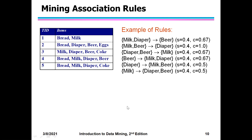Let me clarify. Support equals the count of X union Y divided by N. N is 5. X union Y means milk, diaper, and beer all together. Milk, diaper, beer is present in transaction 3 and transaction 4 — so that's 2 out of 5. Therefore support is 2 by 5, which equals 0.4. The confidence is 2 by 3, approximately 0.67. So support is 0.4 and confidence is 0.67 — the first answer is correct.